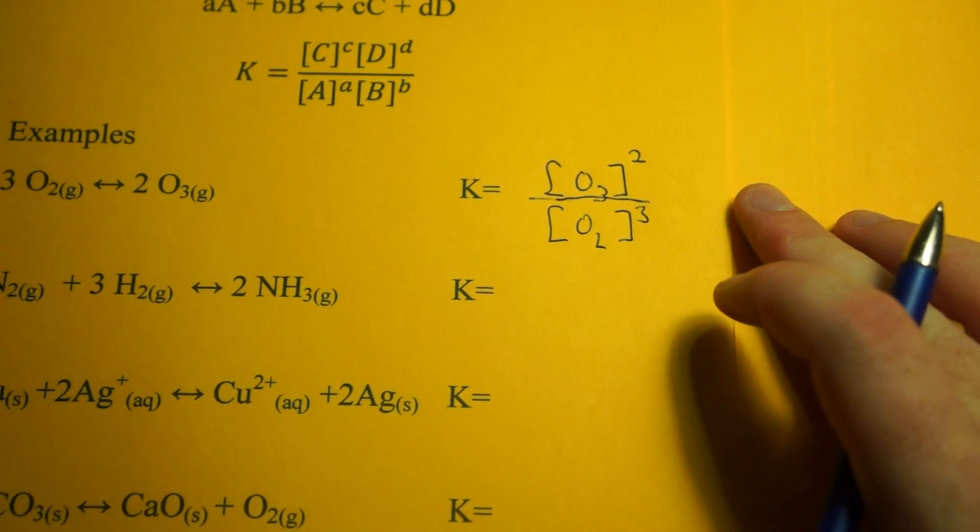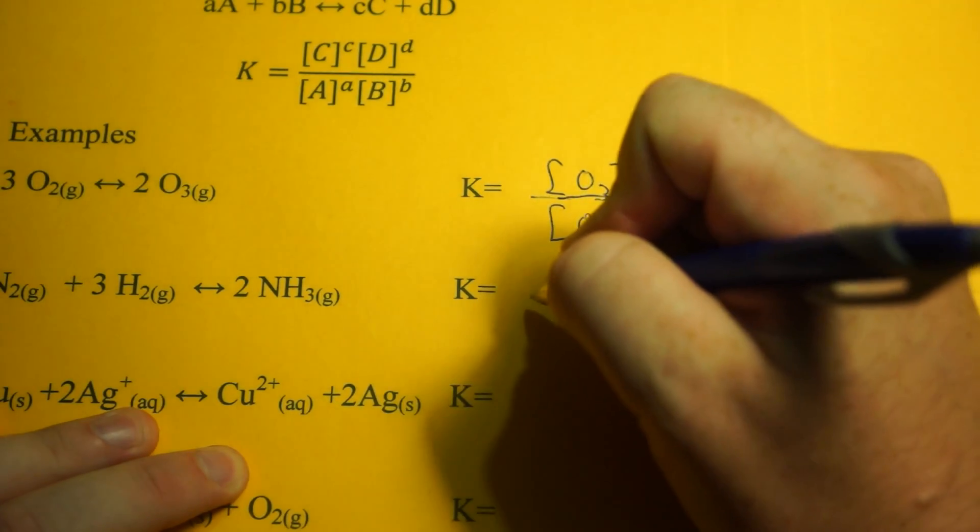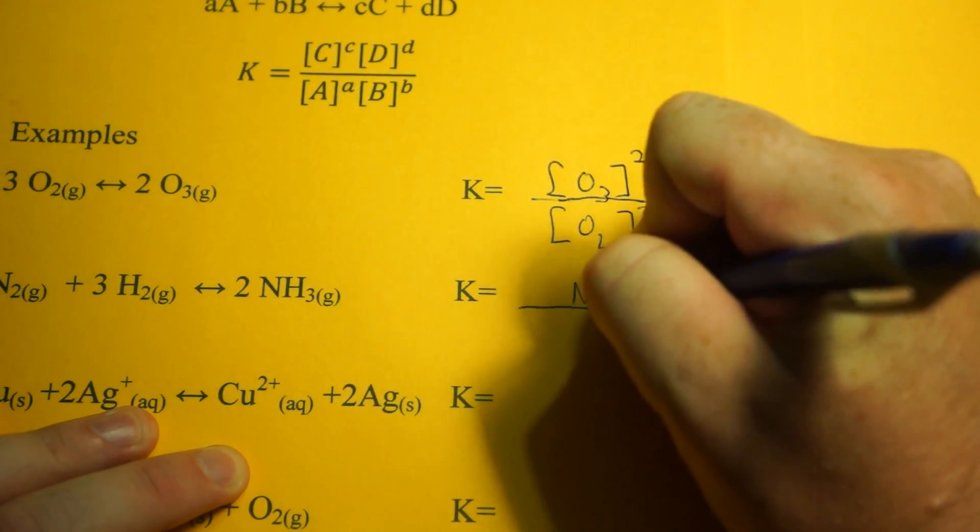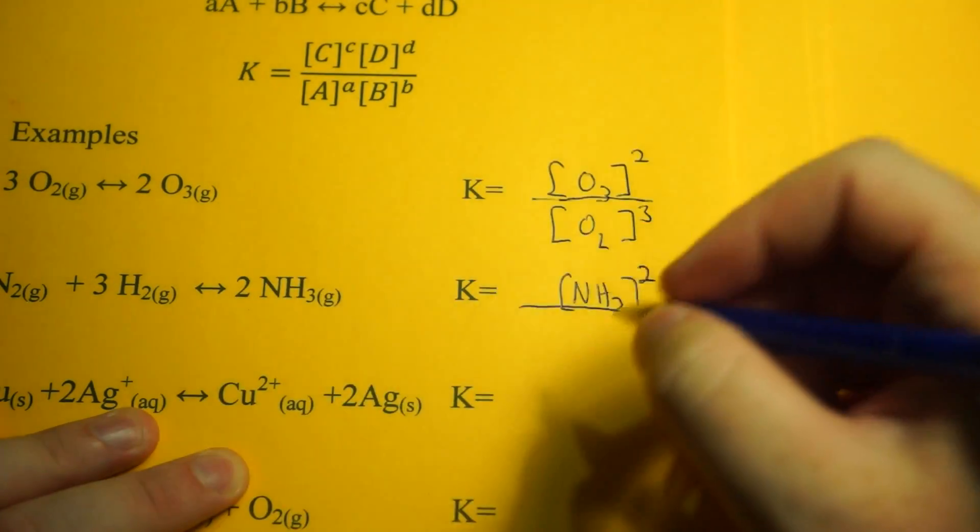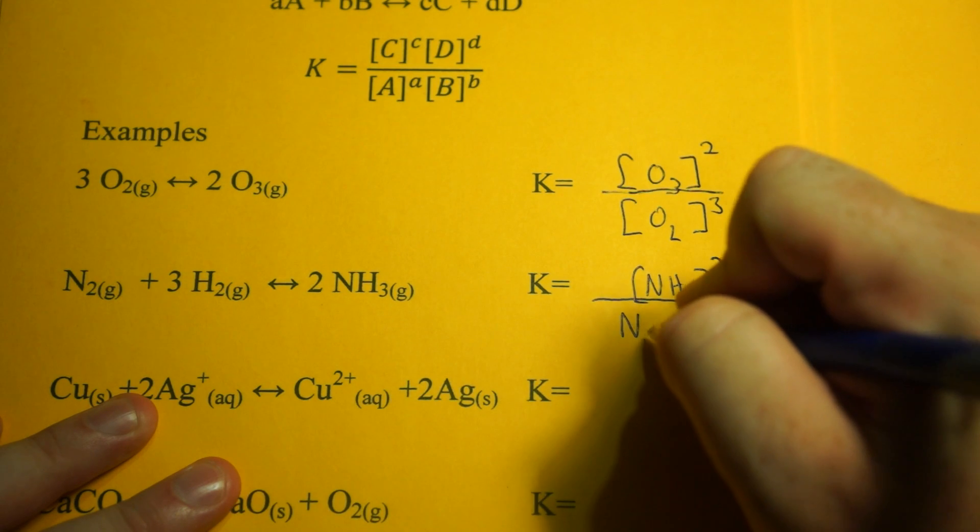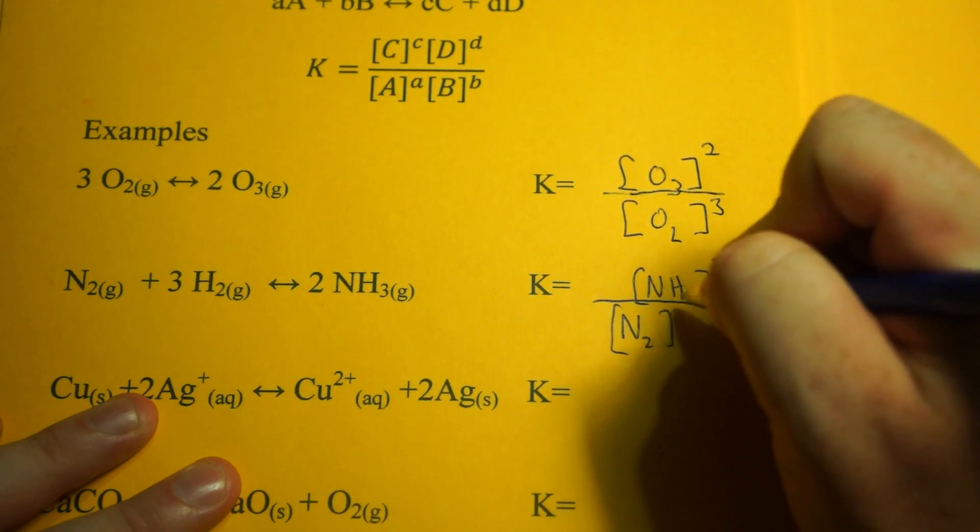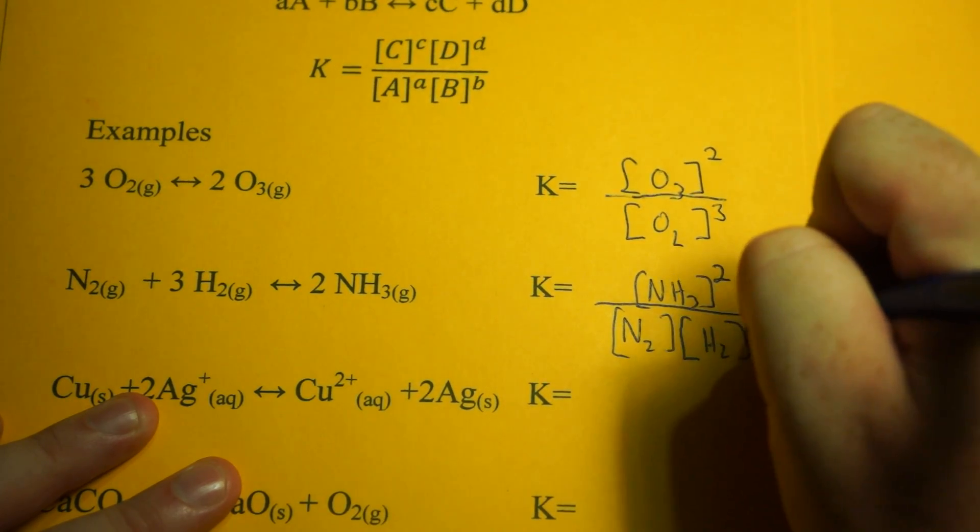Now the Haber process: nitrogen reacting with 3 moles of hydrogen to make ammonia. Let's do products over reactants. Ammonia is on top in brackets to the second power because of the 2. Then we do nitrogen to the first power—we don't have to write that—and H2 to the third power.